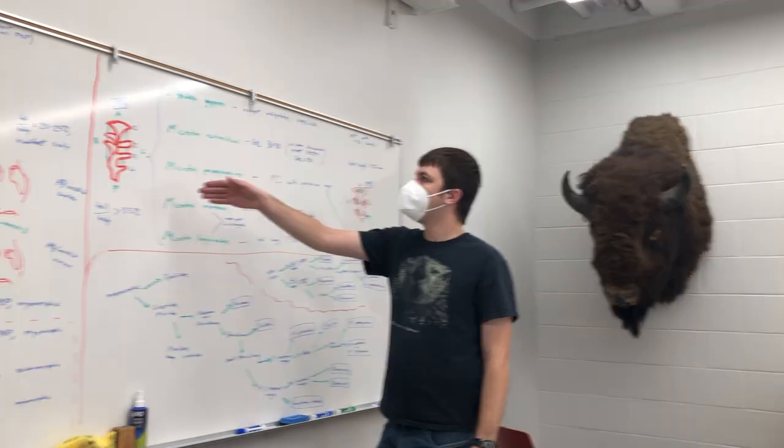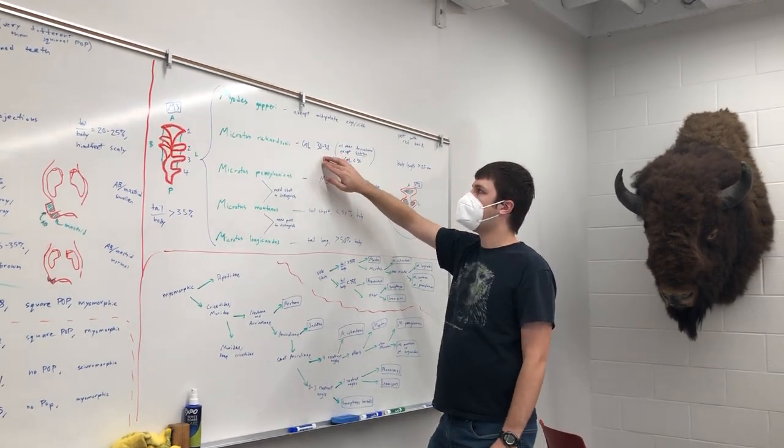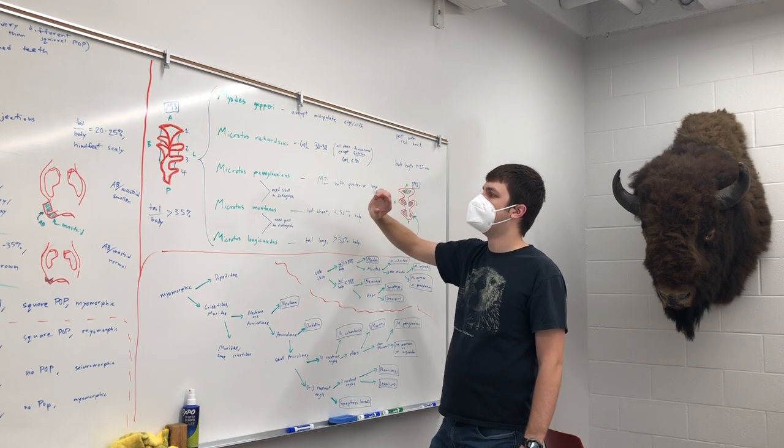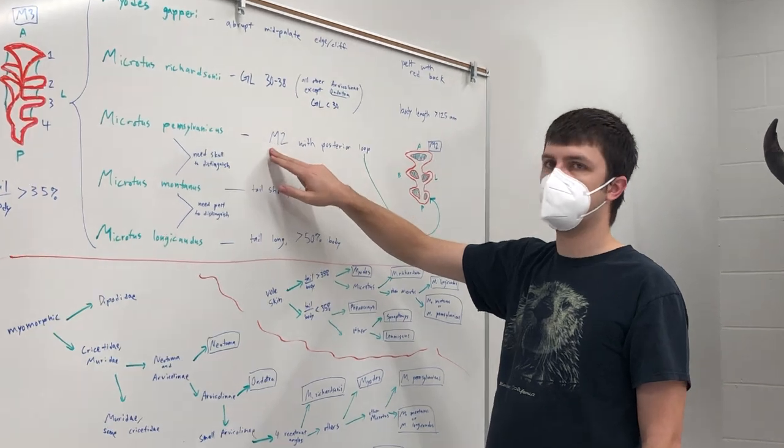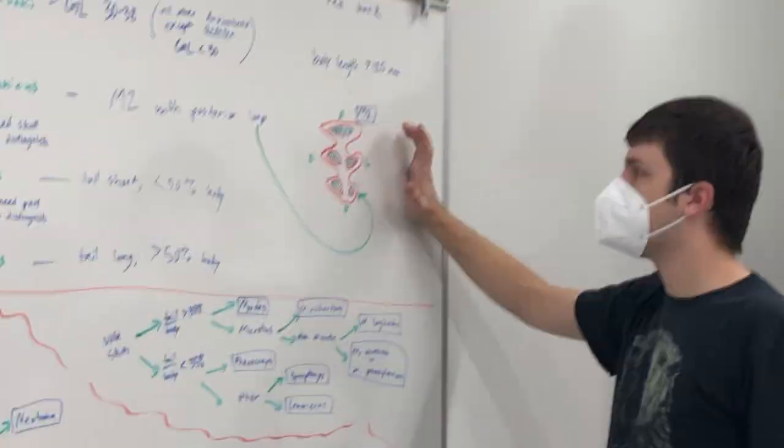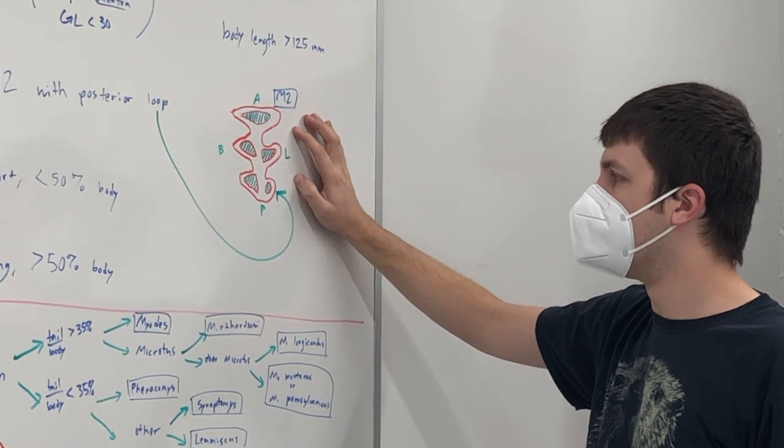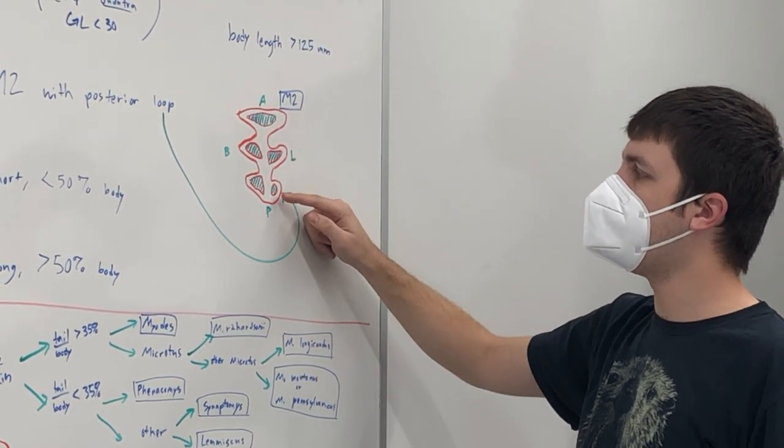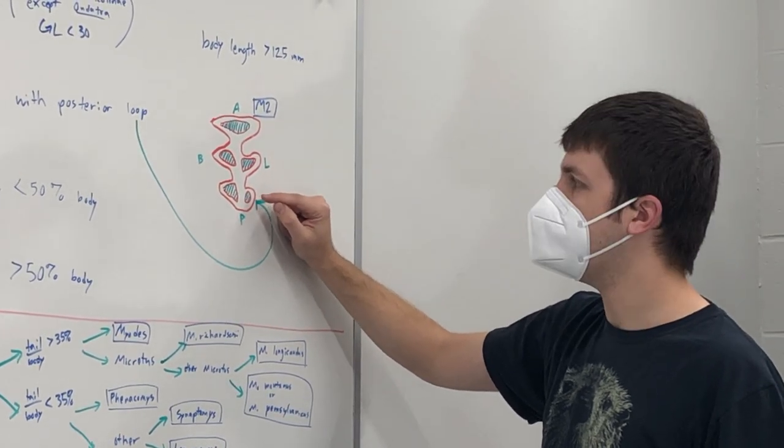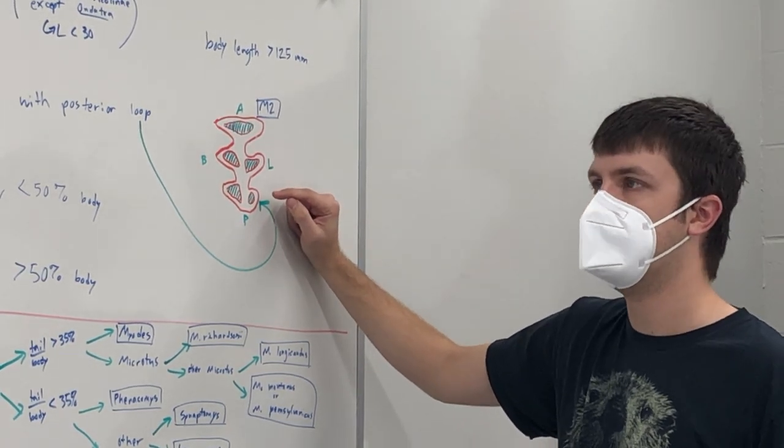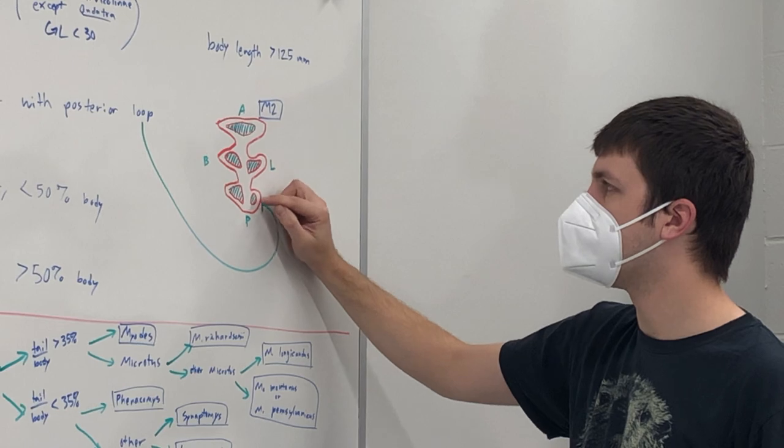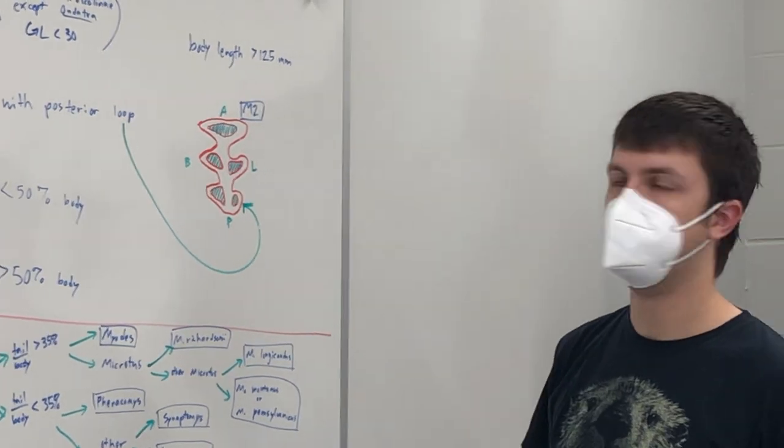So let's say it has four re-entering angles and it's too small to be richardsoni and it doesn't have this abrupt edge. Then why? Well, for Microtus pennsylvanicus, we can look at M2. So this is the second upper molar. We've been talking about the third upper molar. Now we're going to go to the one in front of it. And if you look at the second upper molar, what you see is towards the end, right before you get to this third molar below it, there's this nice, tidy little circular loop. And you see that on Microtus pennsylvanicus. You don't see it on Microtus montanus or longicaudus.